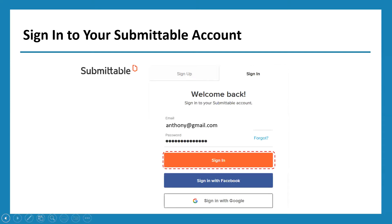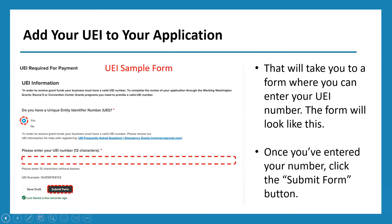You'll then be taken to the login screen for your Submittable account. Simply sign in using the email and password you used to apply for your grant. Once logged in, you'll be taken to a UEI application form. You'll be asked, 'Do you have a unique entity identifier number?' Select yes, enter your UEI number in the open text field, and click the 'Submit Form' button at the very bottom of this additional form.